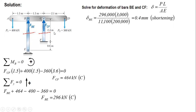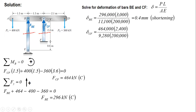For CF: the force is 464 kN, the length is 2.4 m (2,400 mm), the area is 9,280 mm², and E is 200,000 MPa. The shortening of CF is 0.6 mm.